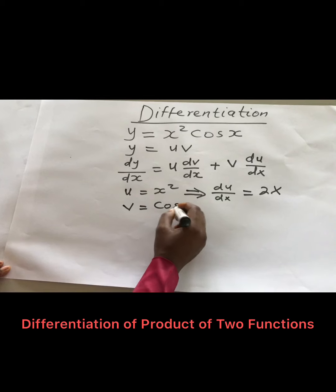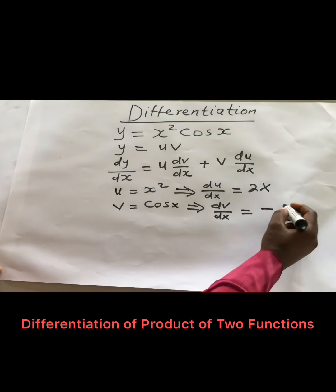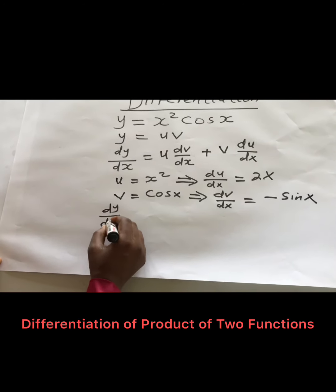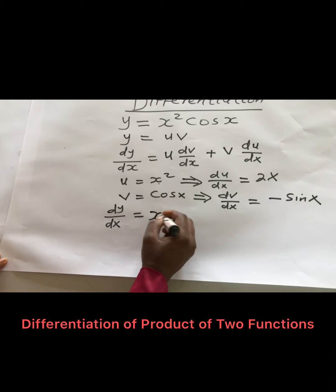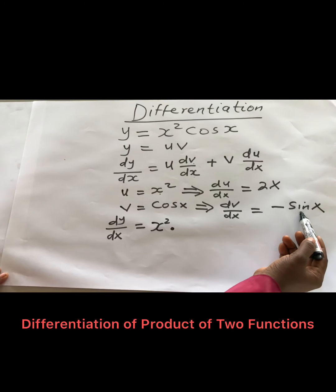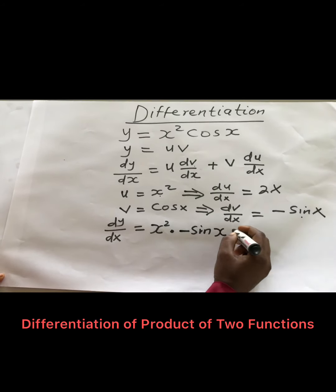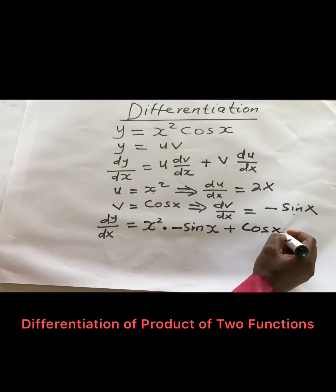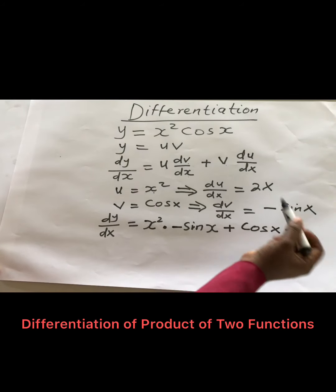Let my V be the trigonometric function — V equals cos X. If I take the derivative of V, I will have minus sin X. So dy/dx will now be U, which is X squared, times dV/dx which is minus sin X, plus V which is cos X, times dU/dx which is 2X.